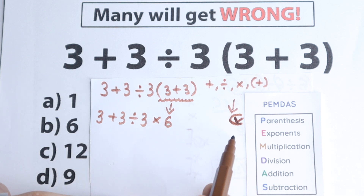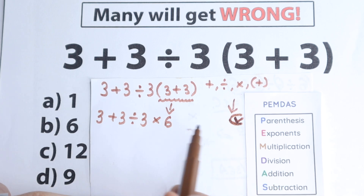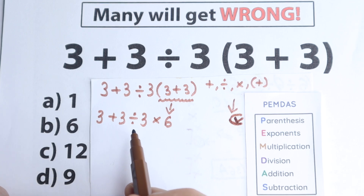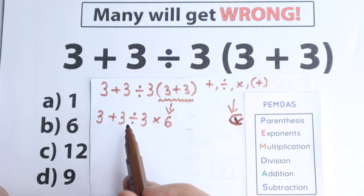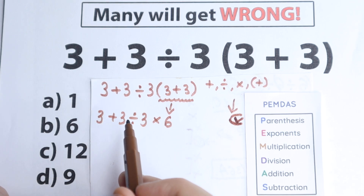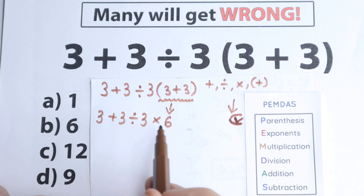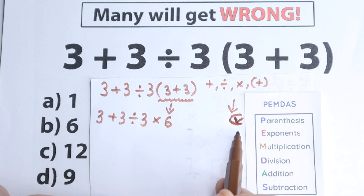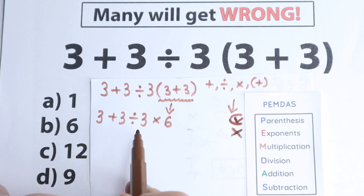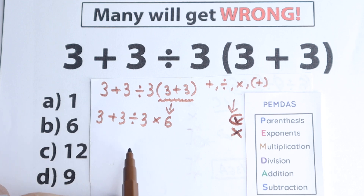The next step is exponents. We need to look — do we have any exponents, like squares or cubes? I don't see any. We don't have any exponents, so we skip this part. Which is really great because with exponents this question would be more difficult.